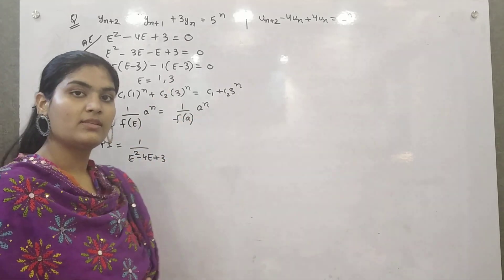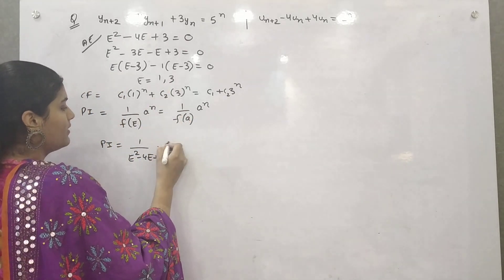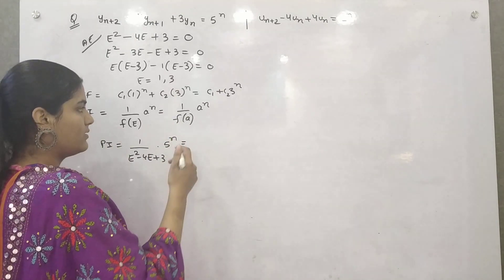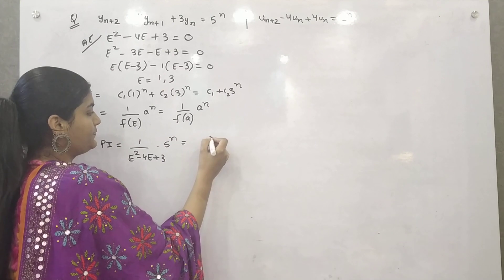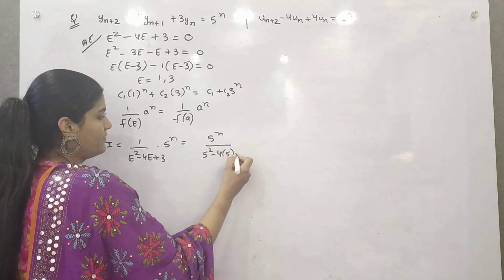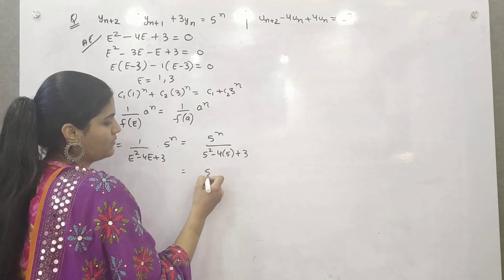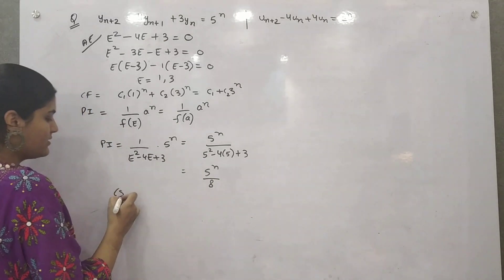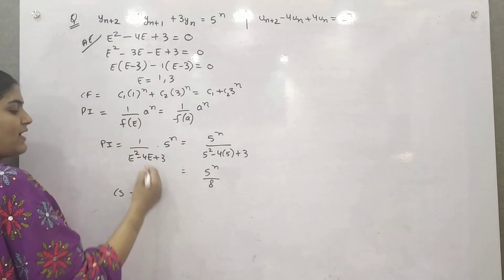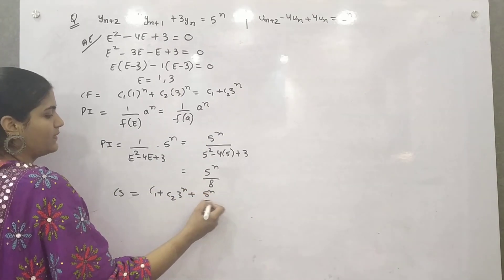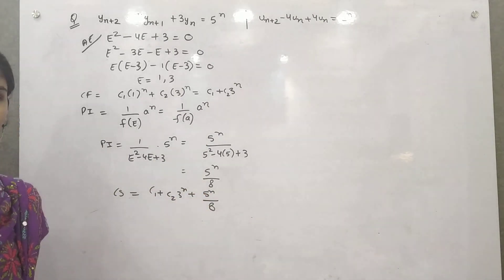So your particular integral will be your auxiliary equation e square minus 4e plus 3. a raised to power n is 5 raised to power n. If you put 5 in place of e according to the formula, it's 5 square minus 4 times 5 plus 3. So 25 minus 20 which is 5 plus 3 equals 8. So your complete solution is complementary factor plus particular integral. And here we go, this is the complete solution.